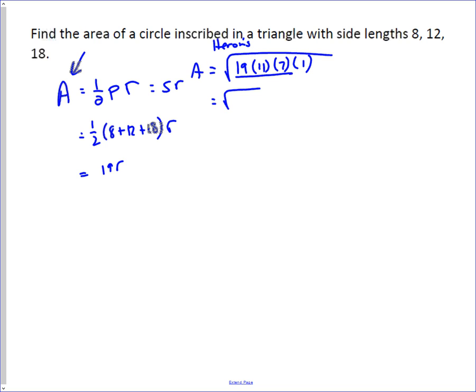So I just multiply them out. So I'm going to do seventy-seven times nineteen, and get fourteen hundred and sixty-three. And so the area is just going to be the square root of fourteen hundred and sixty-three.